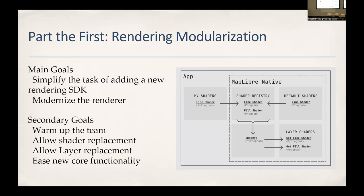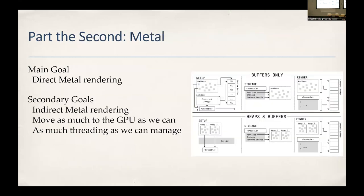We wanted to allow replacement of layers. For example, if you wanted to change the way roads are drawn, right now that would be very painful. We'd like you to be able to say: here's a new road-drawing piece of functionality — just put it in. And ease of adding new core functionality: the way a good open source project works is that people use the hooks you provide to add new functionality, which can then be pulled into the main core toolkit.